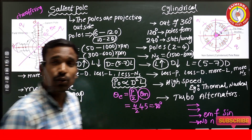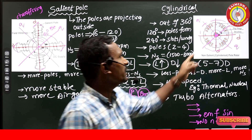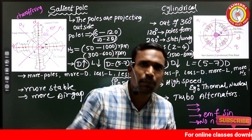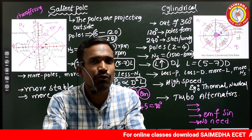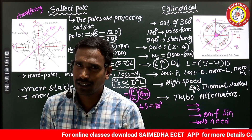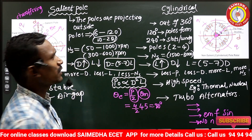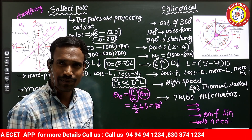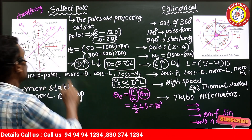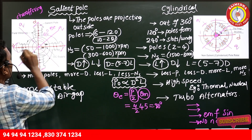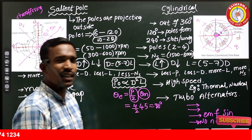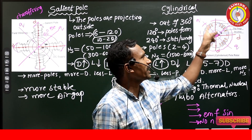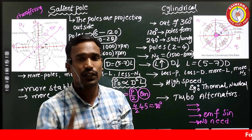In the salient pole rotor, which type of winding is used? In the cylindrical rotor, which type? For both salient pole and cylindrical, the stator uses short-pitch distributed winding. For the rotor: where the winding structure is concentrated, that is concentrated winding. Where the winding has dot notations distributed across slots, that is distributed winding.